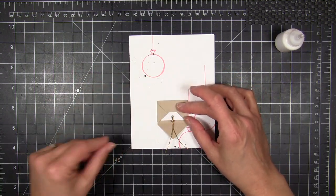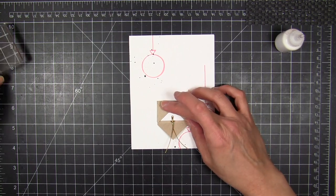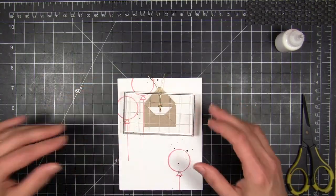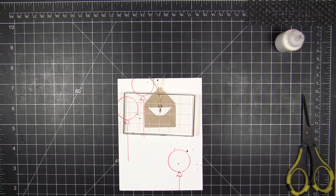And to weight it down so that it doesn't pop up on me while it's drying, I'm just going to take some acrylic blocks and pile a little stack of those on top and let that glue set up.